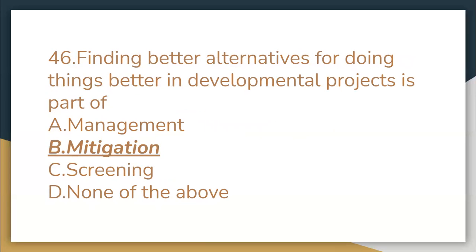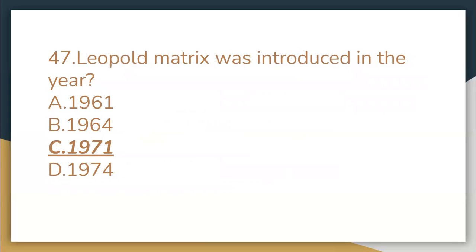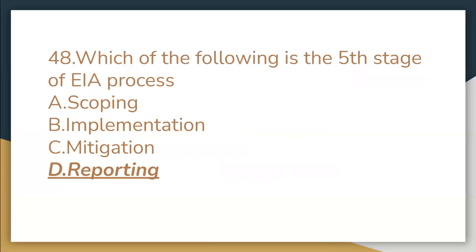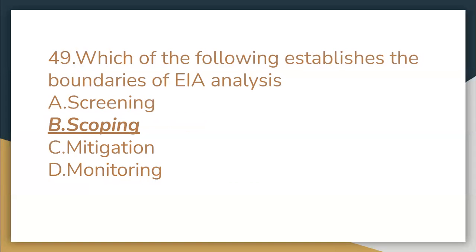Finding better alternatives for doing things in developmental projects is part of mitigation. The Leopold matrix was introduced in the year 1971. Which of the following is the fifth stage of the EAA process? Reporting. Which of the following establishes the boundaries of EAA analysis? Scoping.